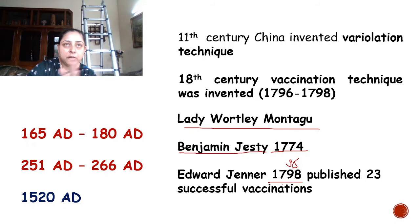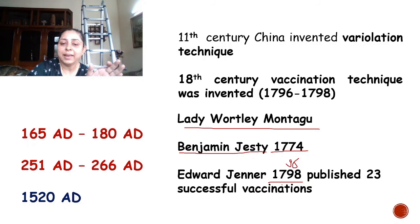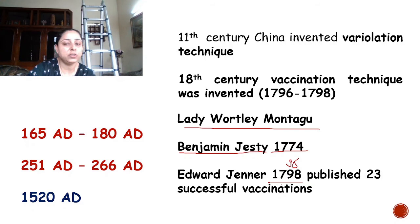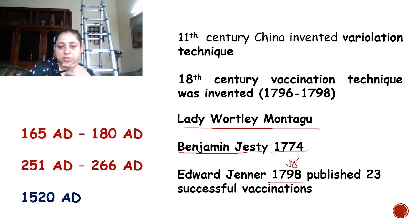Jenner inoculated that boy with cowpox and then later infected the boy with the deadly smallpox virus. He observed that the boy had attained immunity and had become immunized. His experiment was successful. He then did the same experiment with the other 22 people. Then in 1798, he wrote a research paper reporting 23 successful vaccinations, after which he received recognition as the inventor of the vaccination technique. Edward Jenner is now the father of vaccination.